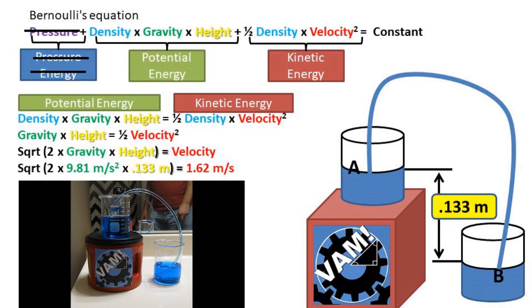We now must plug in the height. I use the height difference between the two glasses when half full. This is 0.133 meters. This works because we are trying to find the average velocity. After we plug in all of our numbers, we get that the velocity on average is about 1.62 meters per second. This is about 6.8 kilometers per hour or about 3.6 miles per hour.